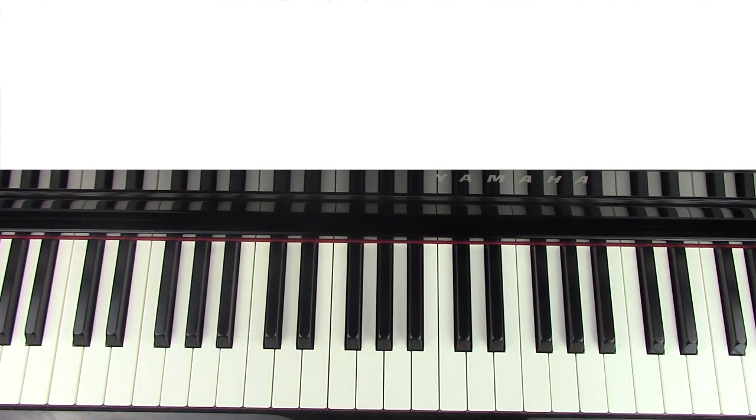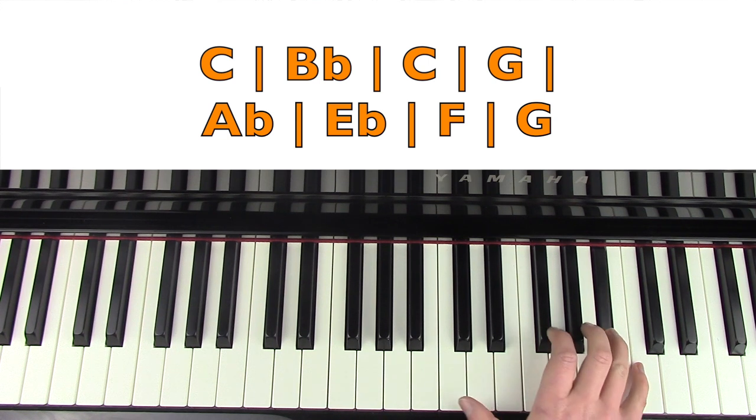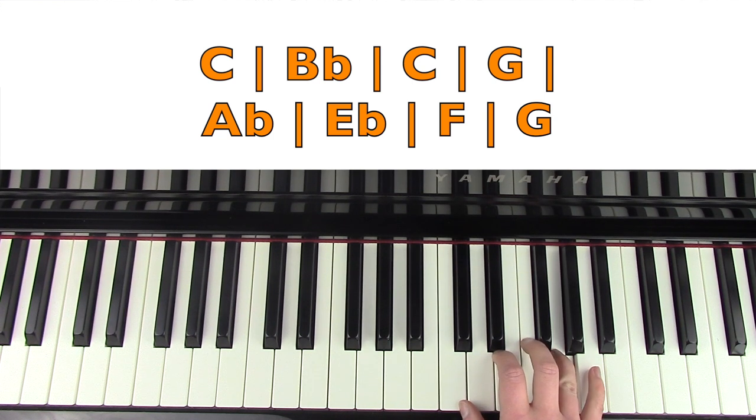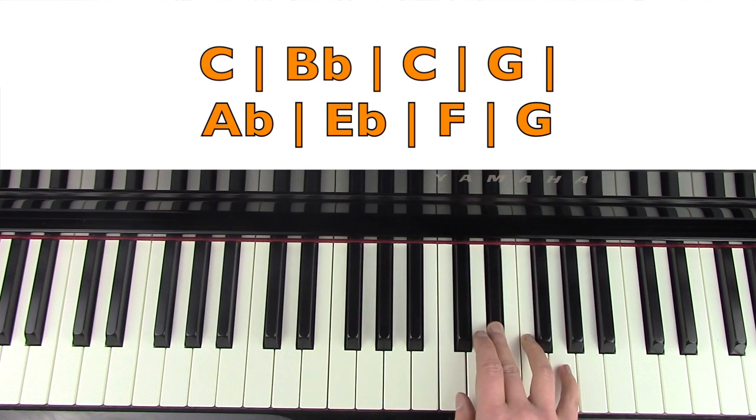So now onto theme two. For the right hand, you could go all the way to that C up there, but to keep this in the shot I'm going to play the C here. You're going to be playing some longer notes in the right hand, and the left hand is going to continue playing a series of broken up chords. The right hand goes C, B flat, C, G, and then A flat, E flat, F, G.